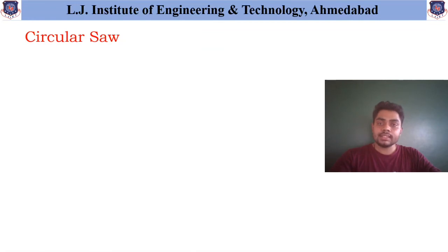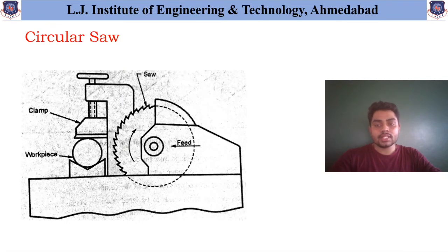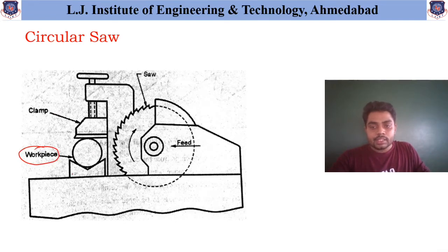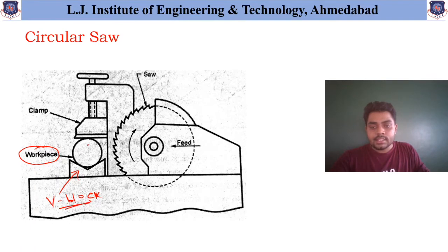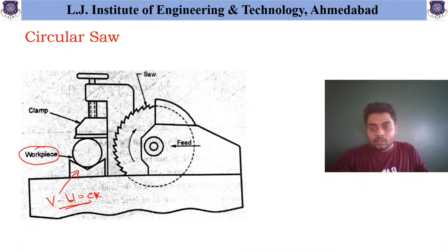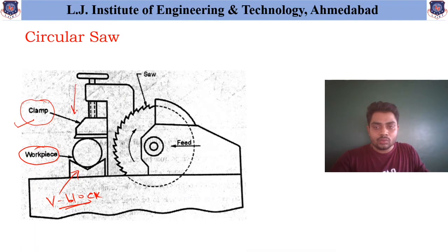Similarly, the next one is the circular saw. Let us have a look at the figure shown over here. The workpiece is set over here on the work holding devices — that is the V-block. As you can see, the workpiece is circular, and to hold circular workpieces, in many cases these V-blocks are used. Another part shown over here is the clamp, and this clamp is arranged and moved in the downward direction for properly fixing this workpiece between this V-block and the clamp.